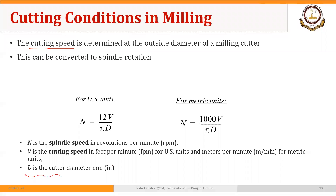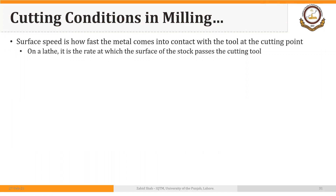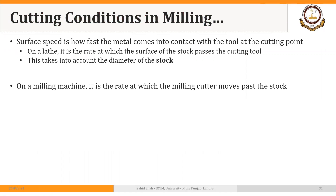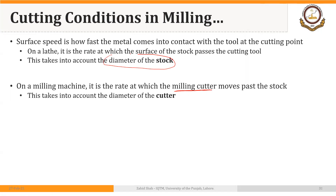Surface speed is how fast the metal comes into contact with the tool at the cutting point on a lathe — it is the rate at which the surface of the workpiece passes the cutting tool. In the case of a lathe, we take into account the diameter of the stock or workpiece. But on a milling machine, it is the rate at which the milling cutter moves past the stock, so it takes into account the diameter of the cutter.